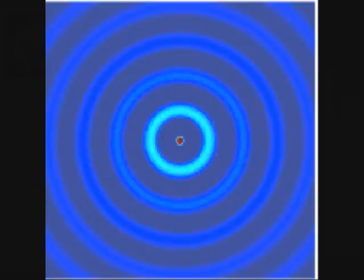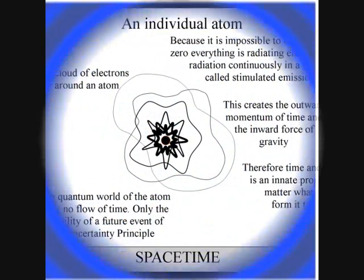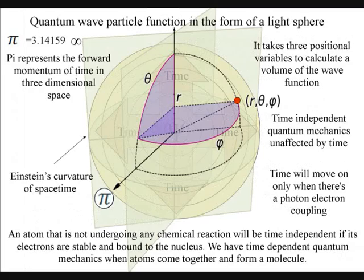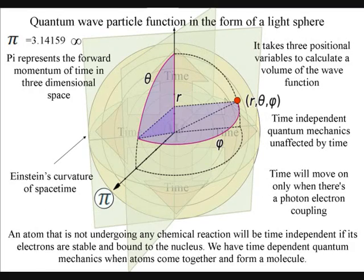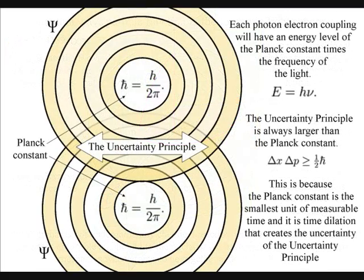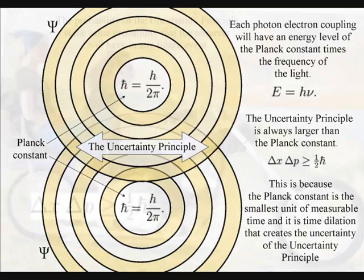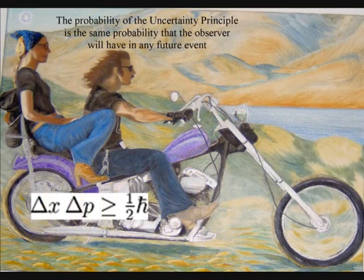But when we zoom in on an individual atom, we find time-independent quantum mechanics, and there is no flow or arrow of time, and all we have is probability. The probability of the uncertainty principle is the same probability that the observer will have with any future event.